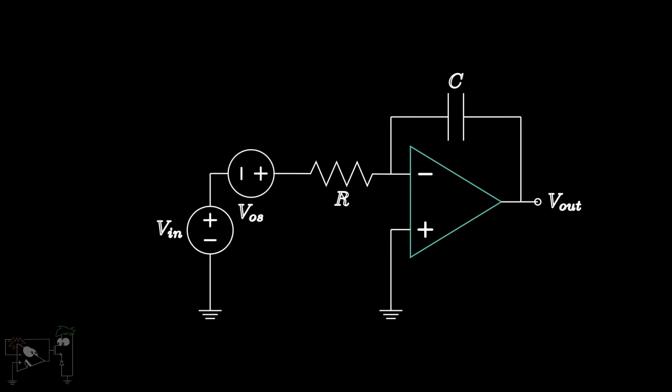Hence, along with VN we have VOS in series. Now, if we switch off VN, we are left with VOS. A certain current is generated due to VOS through the resistor. This current has nowhere to go but through the capacitor.